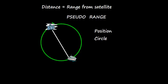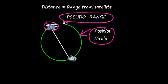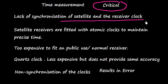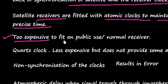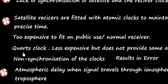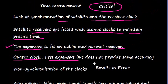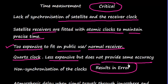It is a simple principle. Suppose this is the satellite. We can measure the range. This is a position circle, and this range is called pseudo range. Let's talk about time measurement, which is pretty critical. There can be a lack of synchronization of satellite and receiver clocks. The satellites are fitted with atomic clocks to maintain precise time, but they are too expensive for public use or normal receivers. For public use, we have quartz clocks which are less expensive, but they do not provide the same accuracy. This results in non-synchronization of the clocks, which means there is an error in the results.